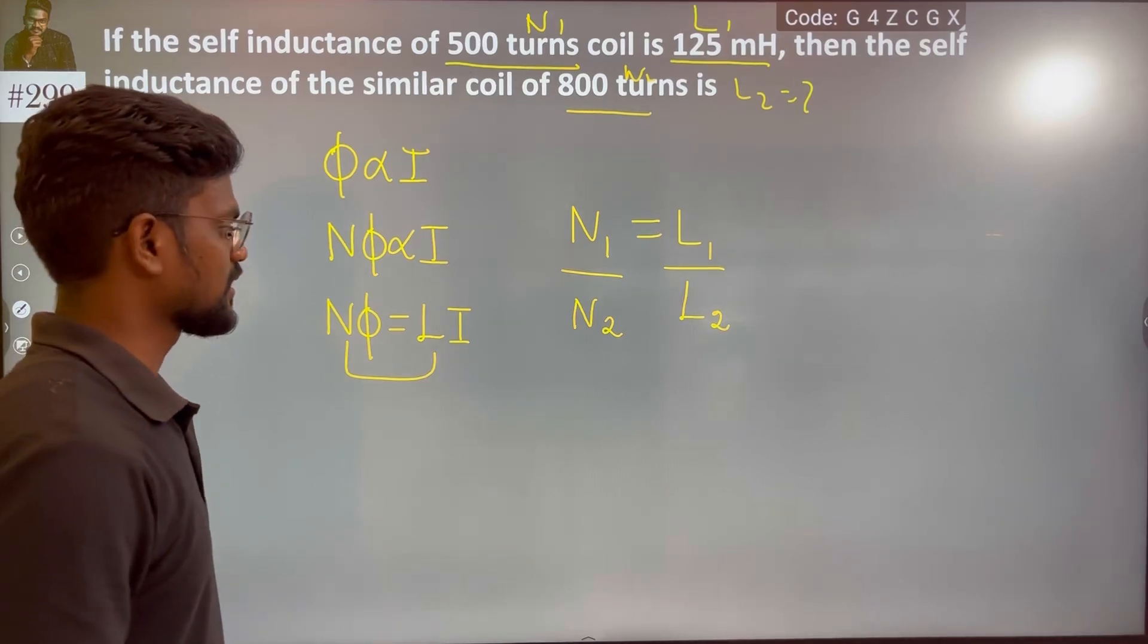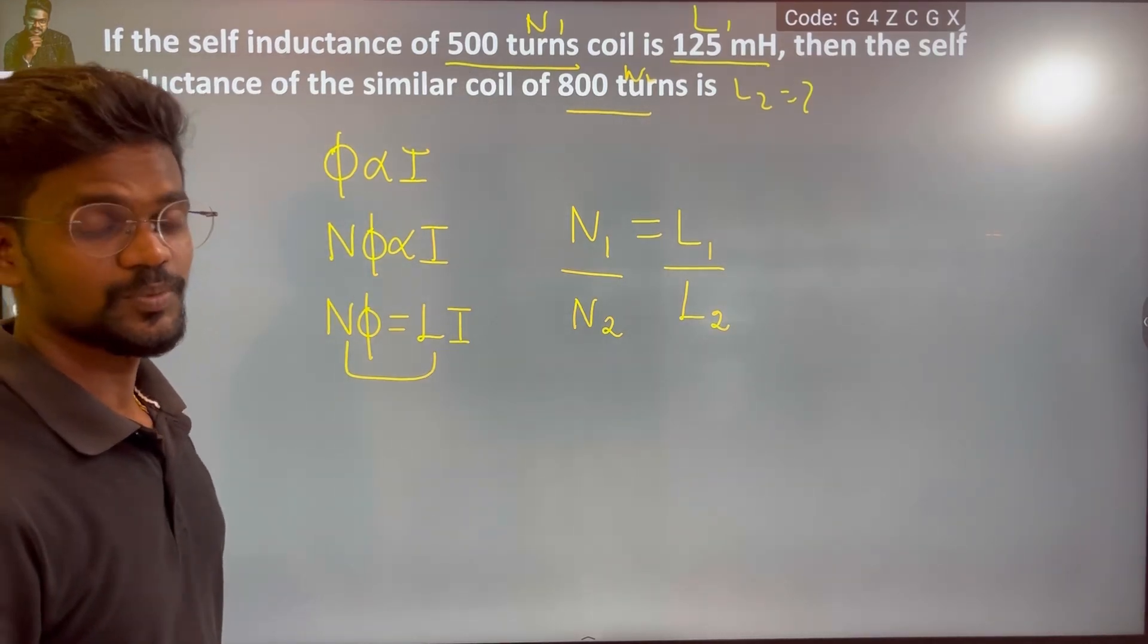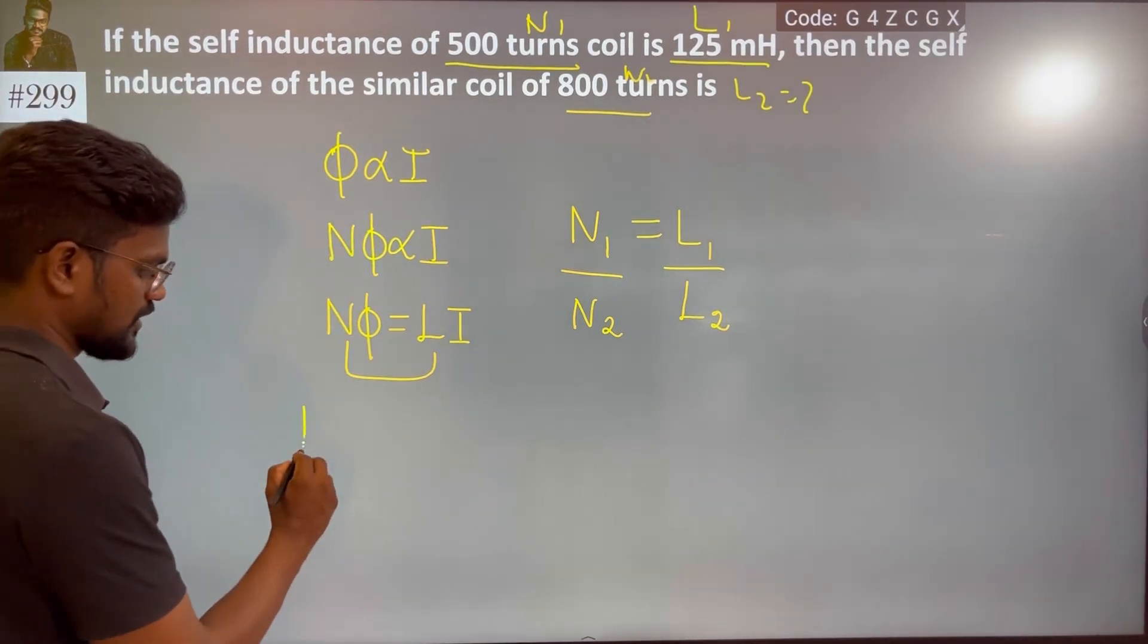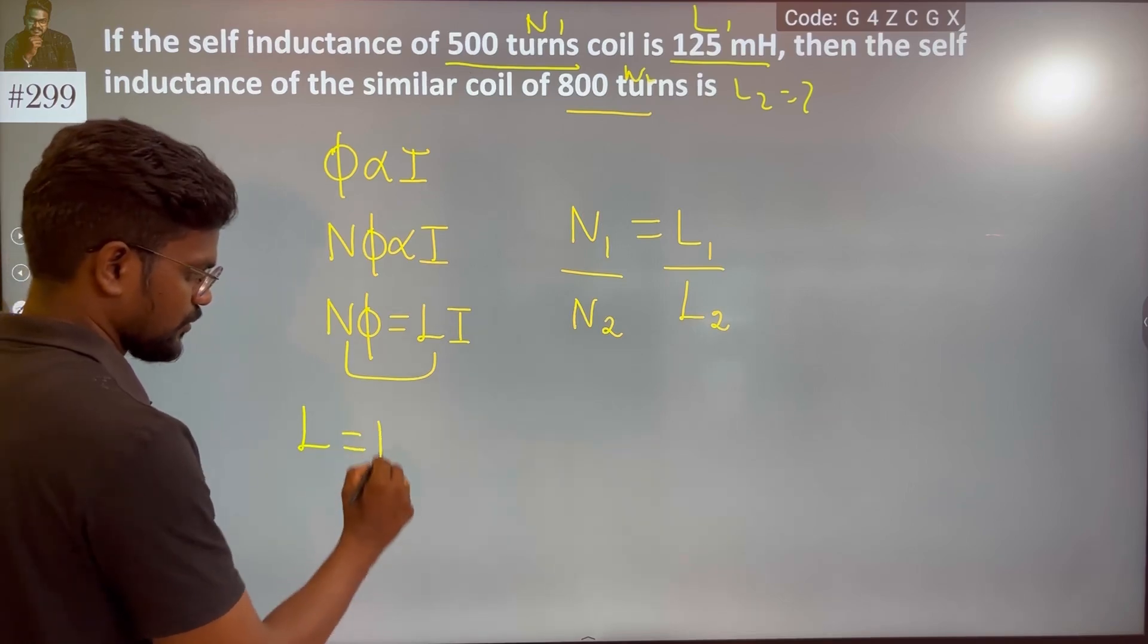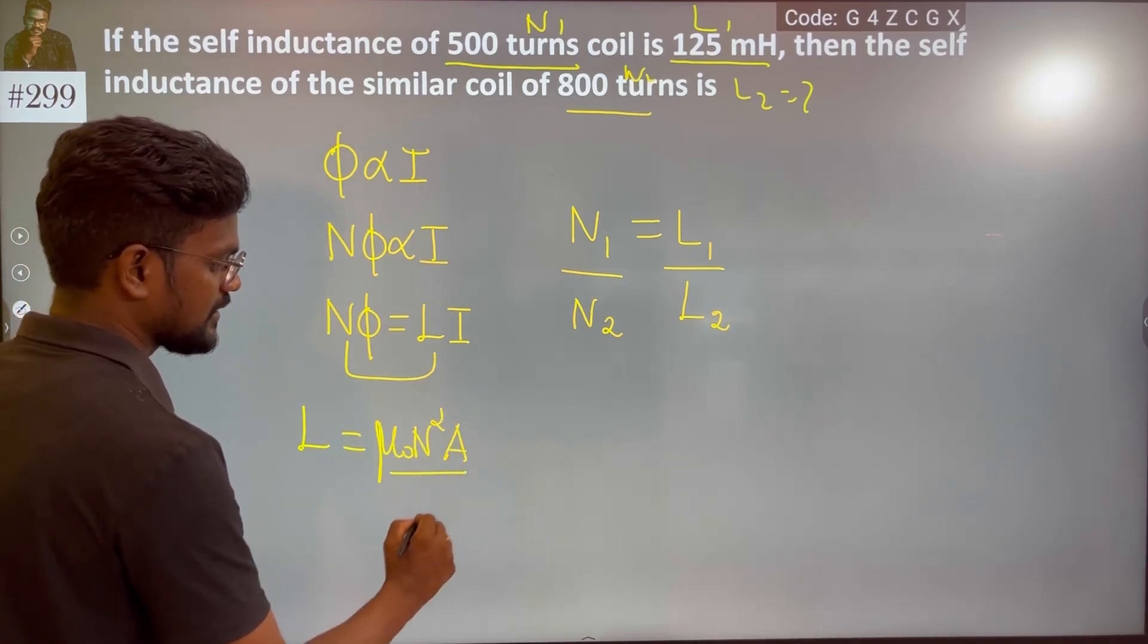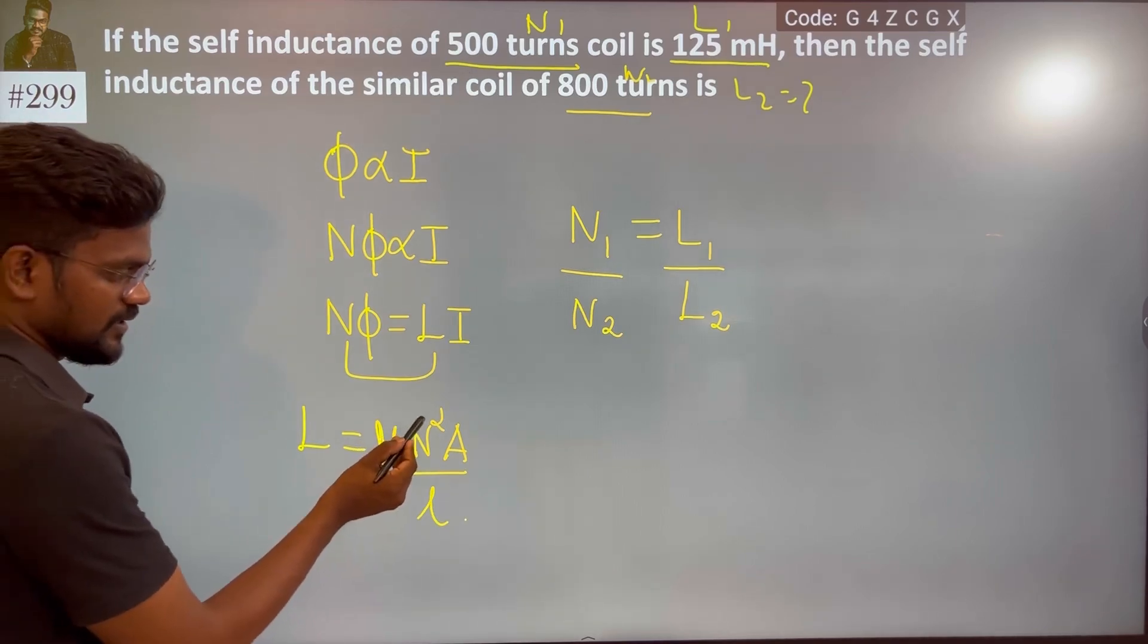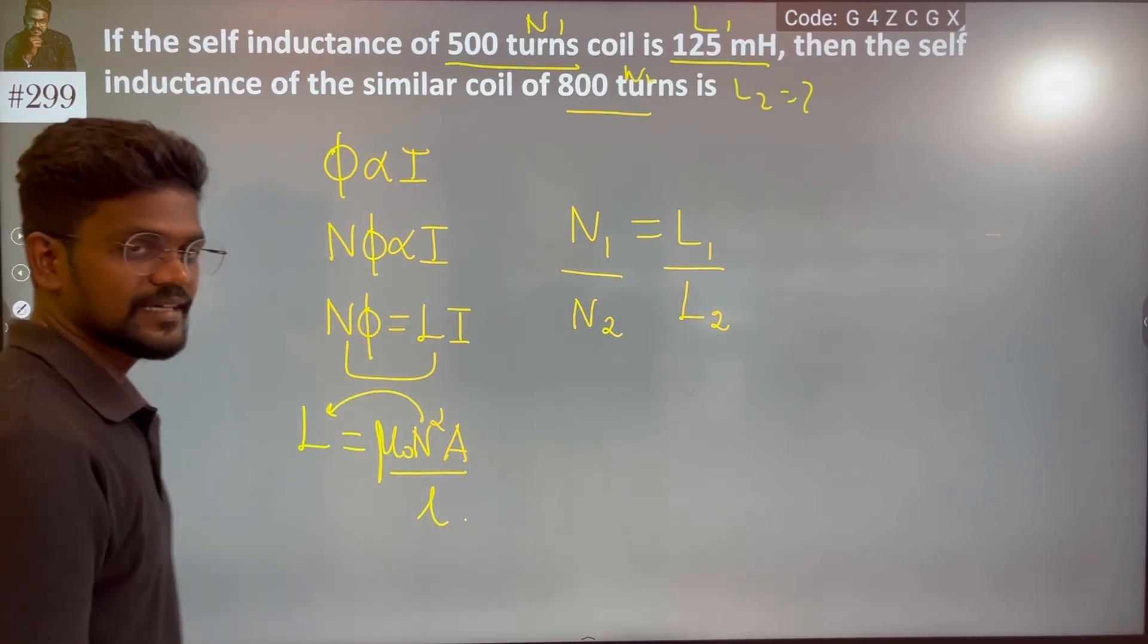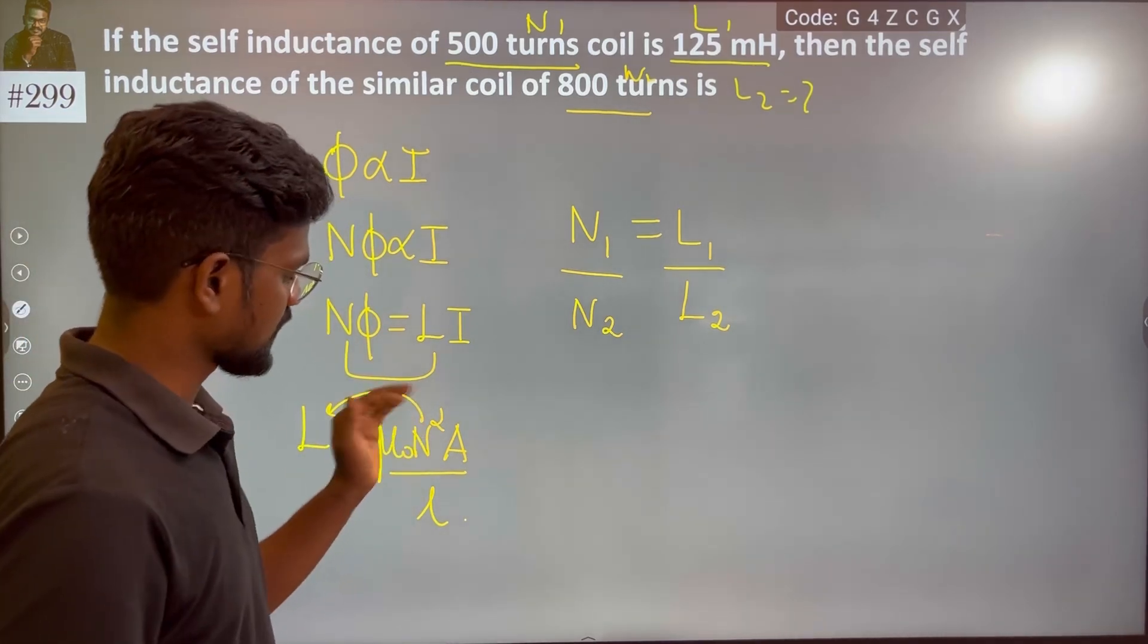So on the right hand, we also know L, which is equal to mu naught n square A by L. So n1 equals L, n2 equals L.